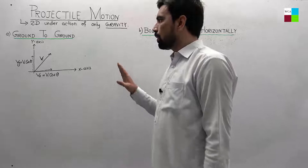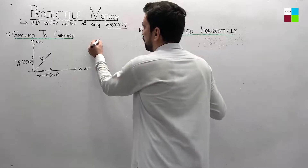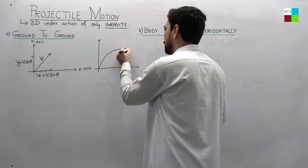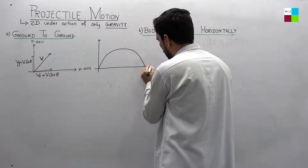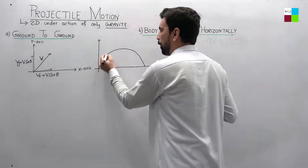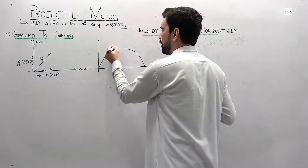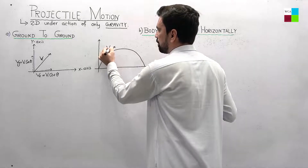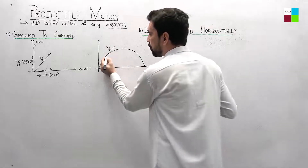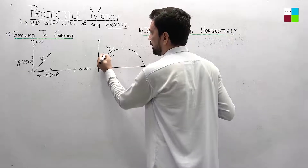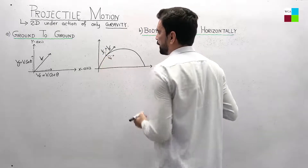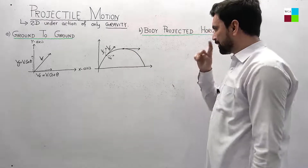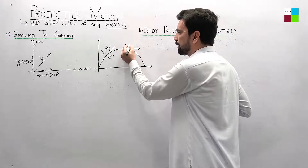When a body is projected and is moving along the trajectory, at each and every point after the initial velocity, there is a final velocity at any given time. This velocity also has two components: one is the vx component and one is the vy component. Similarly, when the body approaches the summit point — this point is known as the summit point — you can clearly see that the velocity has only one component, and that is the vx component.